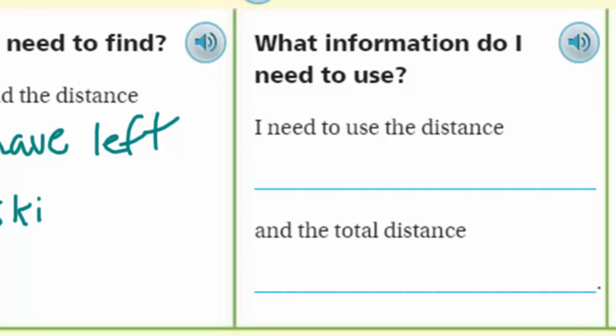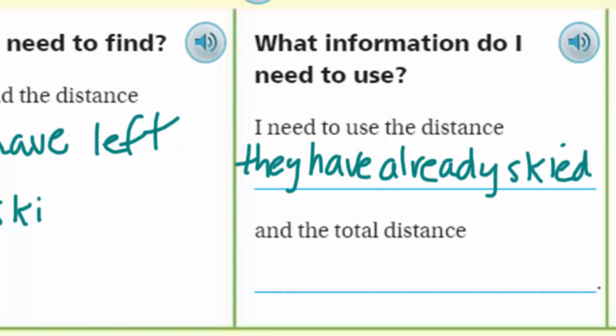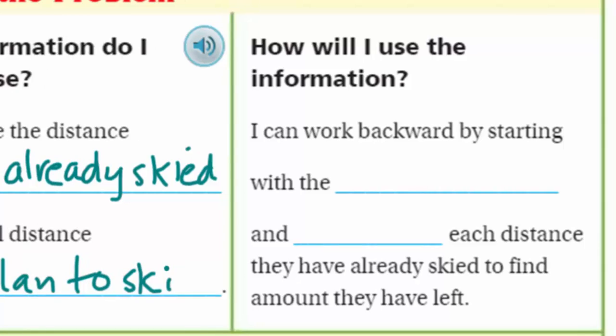Well, I need to find the distance, right? Because that's what the question actually asks us. It says, how many more miles do they have left to ski? So let's go ahead and put that down. Next is, what information do I need to use? Well, it says I need to use the distance that they already skied. Because we're trying to find kind of that total distance if they're going to ski the length of four miles. And they've done some of it so far. We need to know what that part is that they've already done. And, of course, the total distance they plan to ski. That's the information that we're going to use.